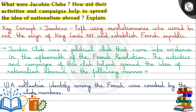The question is about the Jacobin clubs — what they were called and how did their activities and campaigns help spread the idea of nationalism abroad? Coming to the key concept of the question, we are going to talk about Jacobins.